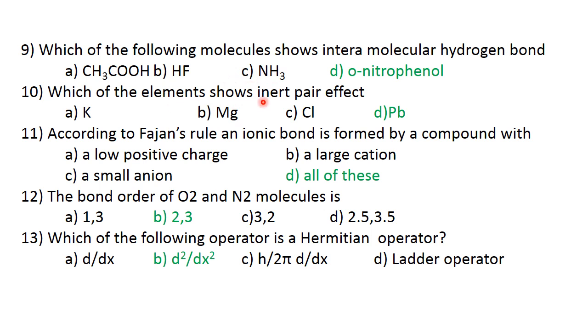Which of the elements shows inert pair effect? This is the correct answer. The ionic bond is formed by the compound with a low positive charge, a large cation, a small anion. All of these are correct answers.